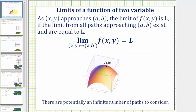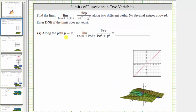For review, as x comma y approaches a comma b, the limit of f of x comma y is L if the limit from all paths approaching a comma b exists and are equal to the function value L. So looking at the graph of the surface, if we are approaching a comma b, then the limit equals the function value L if from all paths approaching a comma b we do approach the function value L.